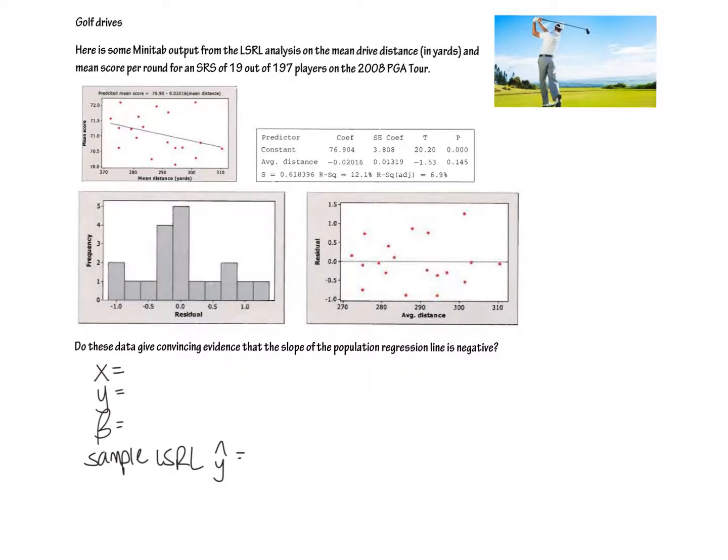We are first going to define all of our stuff. We always start by defining what's the x, what's the y in context in this problem. Our x is the mean distance in yards. Our y is the mean score in points. We want to know what this beta is. Remember, the beta is the slope. That is going to be given up here. Remember, it's the coefficient for the average distance. And so make sure you've got your y-hat here for your sample LSRL. You will get dinged if you don't have a y-hat here. It's not a y because we don't know exactly what each y is. Each y does not fall perfectly on this line. These are y-hats, which are predicted y values, not the actual y values that are observed.